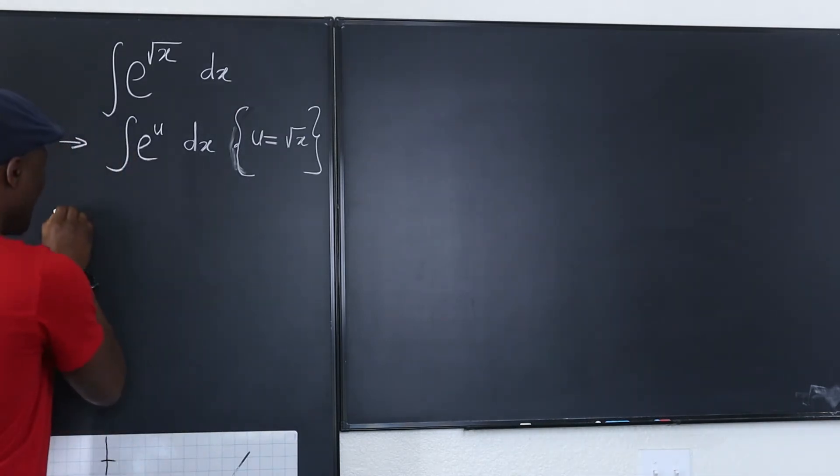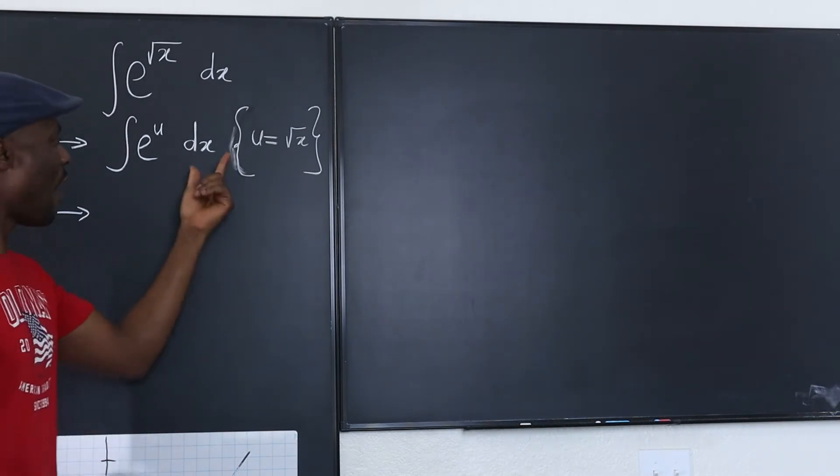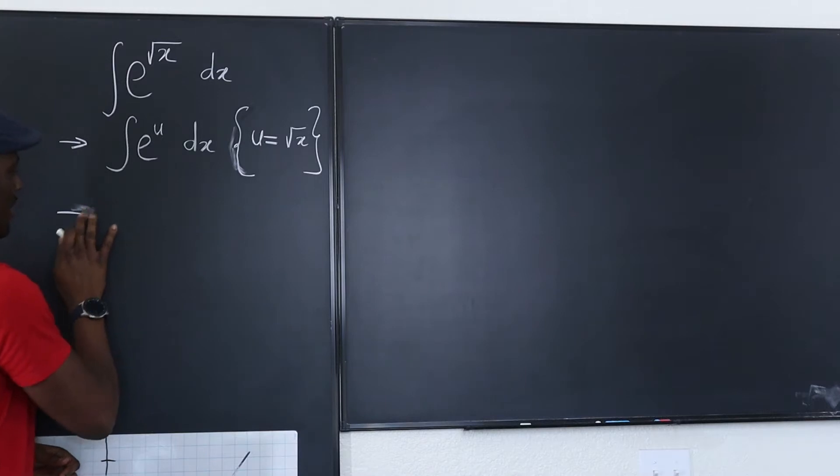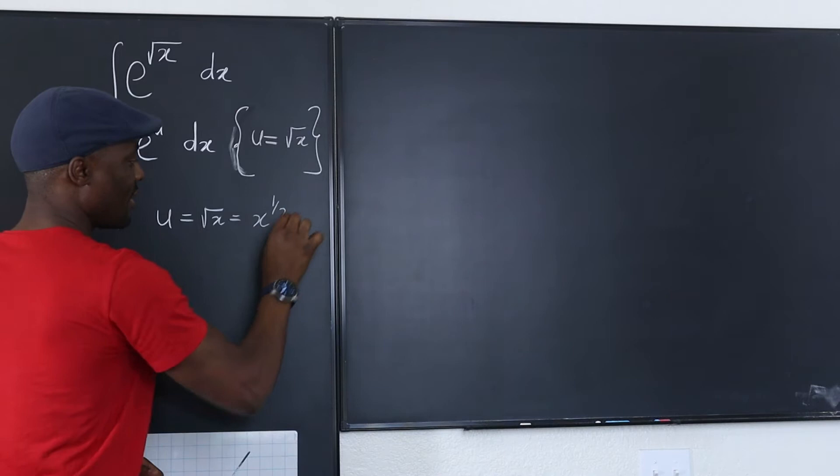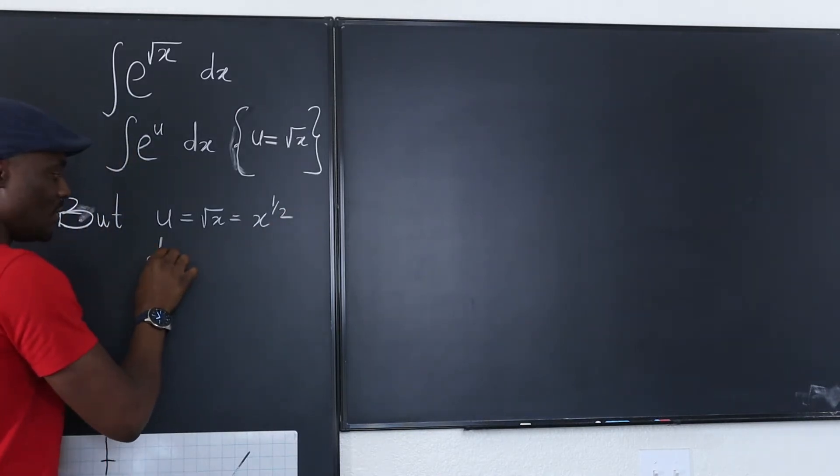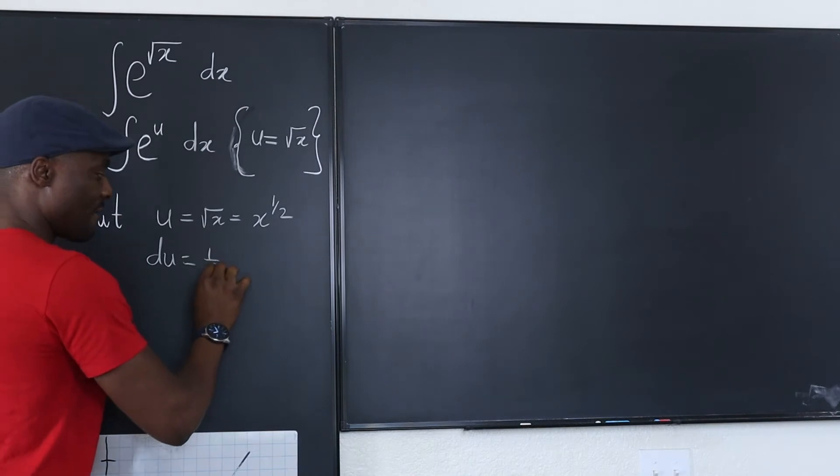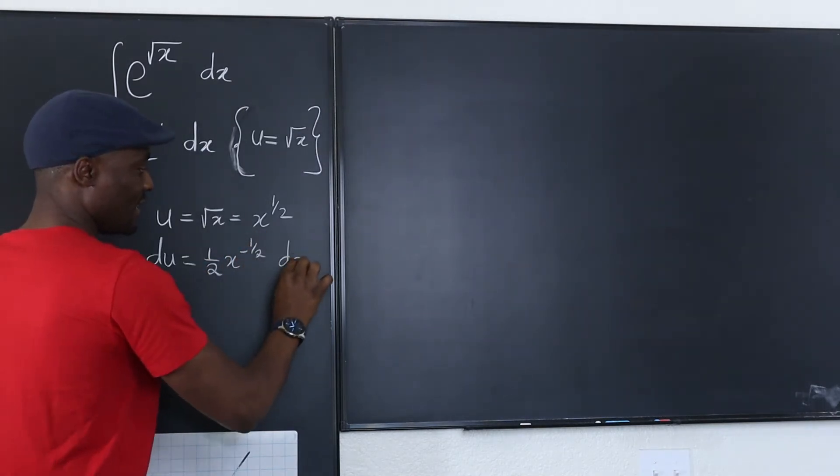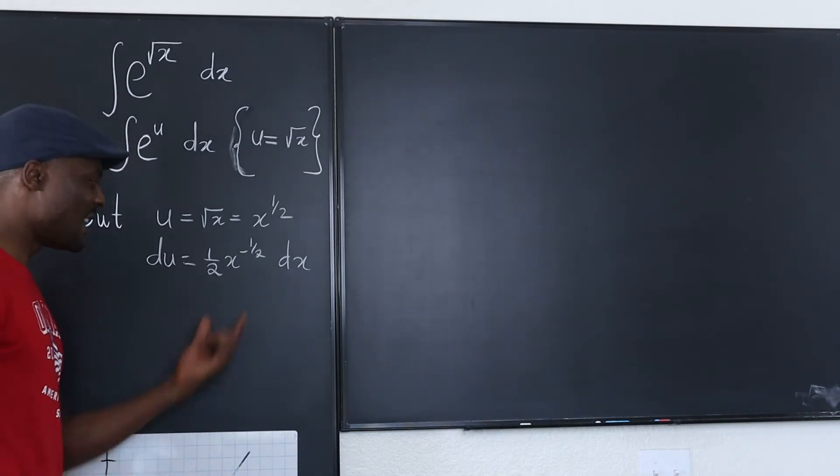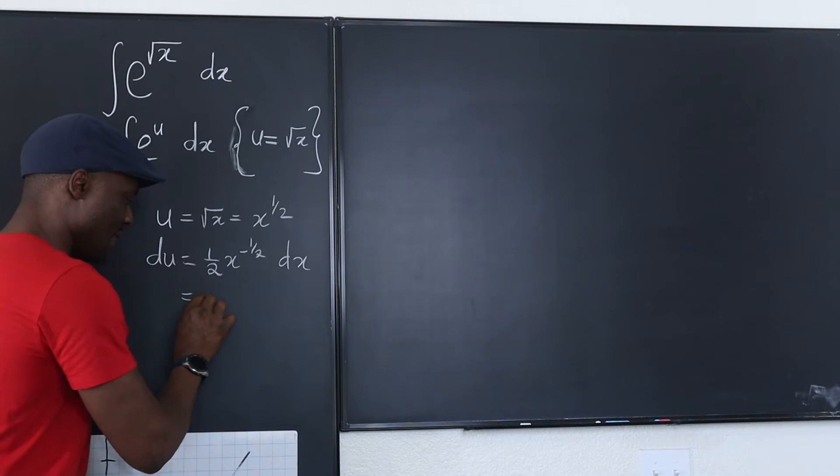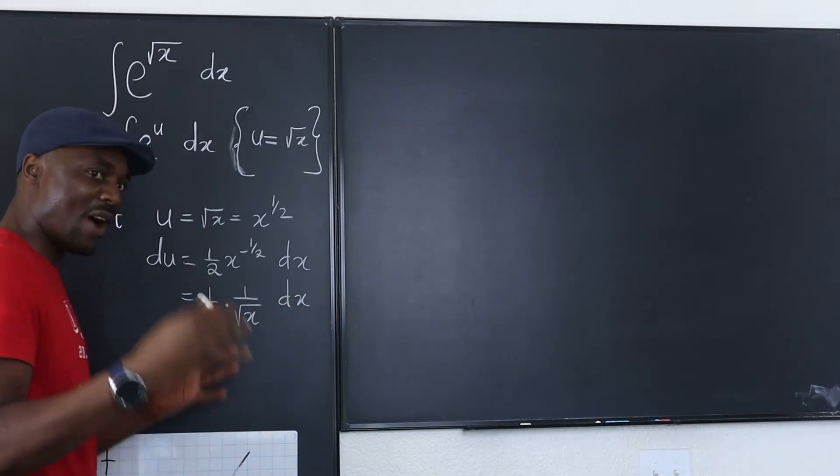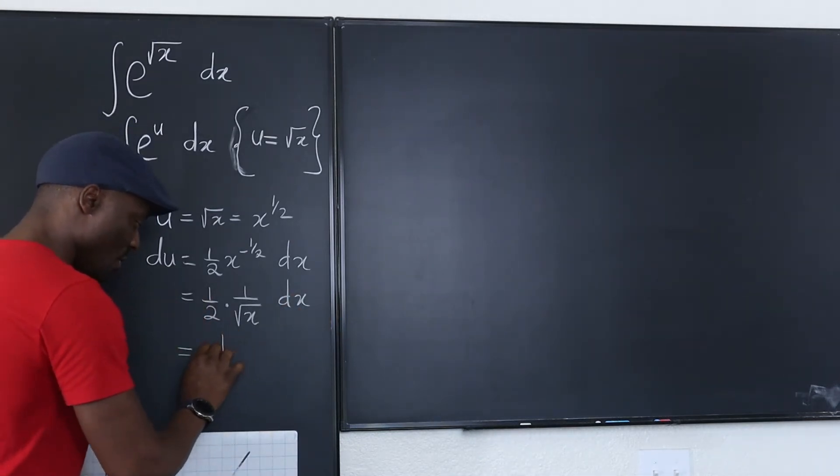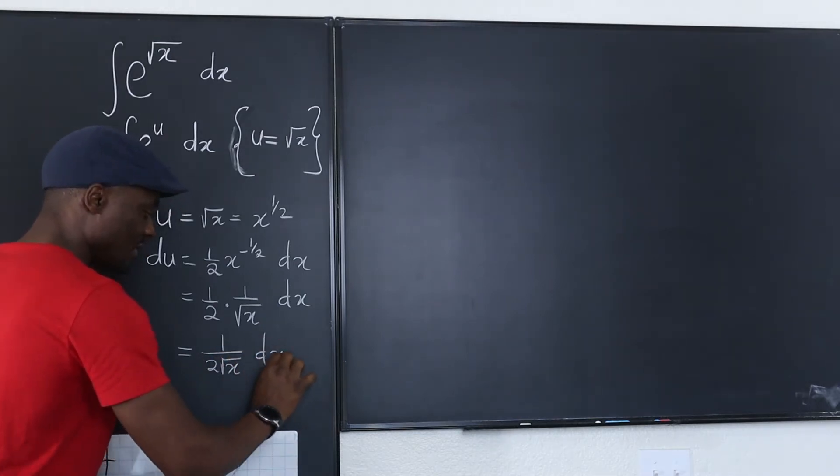So what you want to do now is how do we replace the x? But u equals square root of x which is x to the 1 half. What's du dx? If we differentiate, du is going to be 1 half of x to the negative 1 half dx. This would be the same thing as 1 half times 1 over the square root of x dx, which is just 1 over 2 square root of x dx. That's your du.